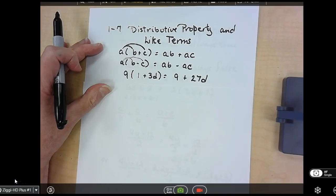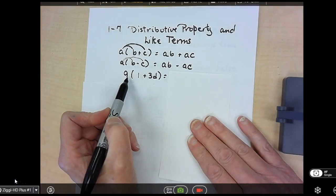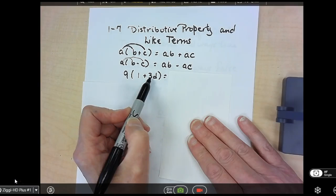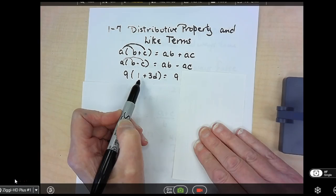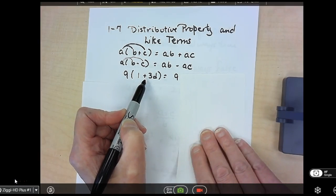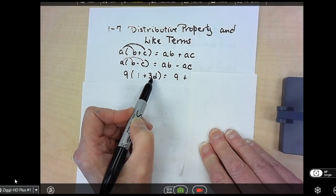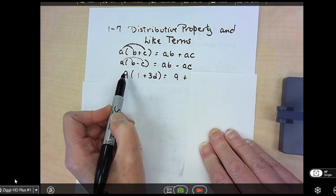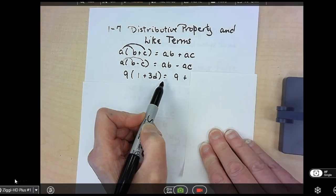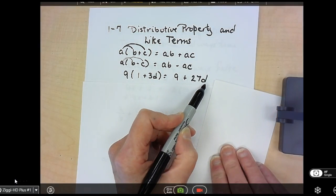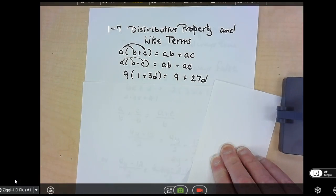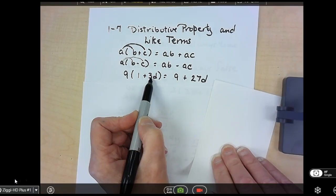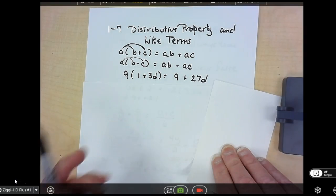So when we have 9 times the quantity 1 plus 3D, we take 9 times 1, which is 9, put down our plus sign. 9 times 3D, all we do is multiply the numbers. 9 times 3 is 27, and we include the D. So this number in front of the D is called your coefficient. 9 times 3 is 27D.